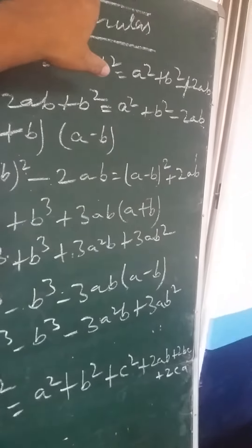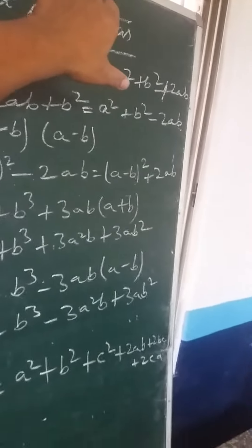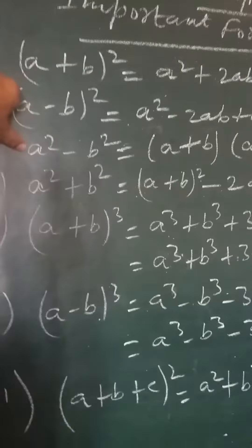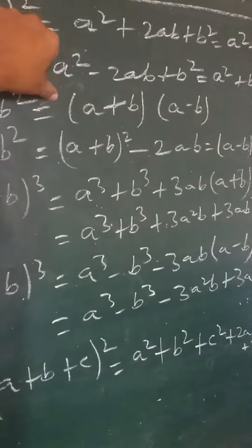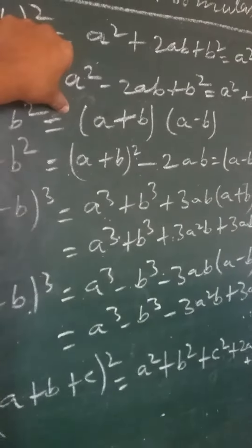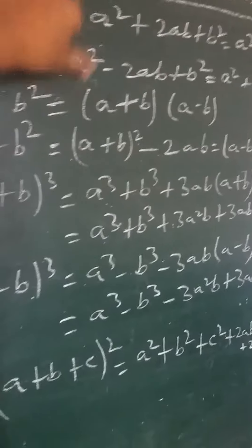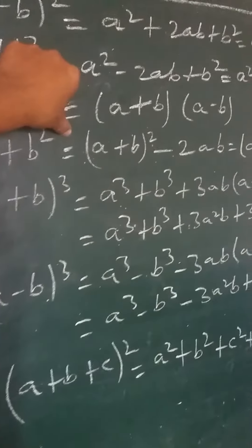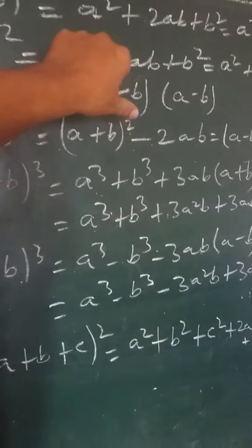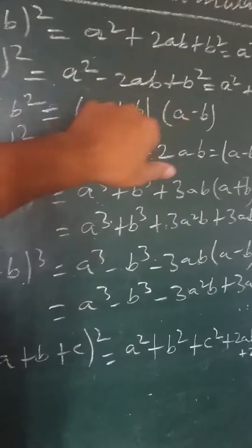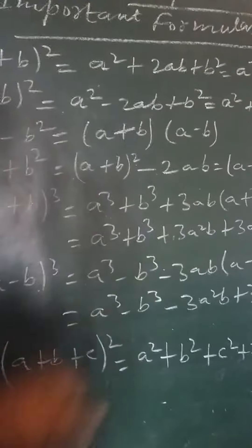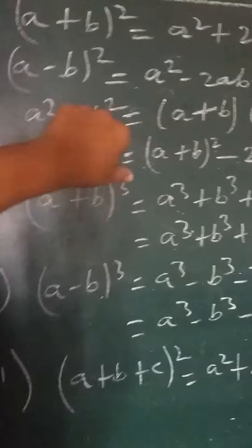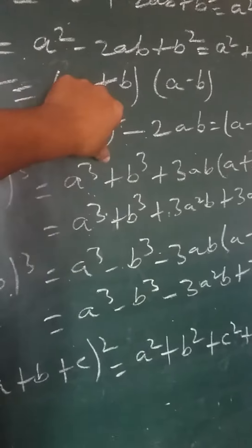a square minus b square equals (a + b) into (a - b). a square plus b square equals (a + b) whole square minus 2ab, which also equals (a - b) whole square plus 2ab. (a + b) whole cube equals a cube plus b cube plus 3ab into (a + b).